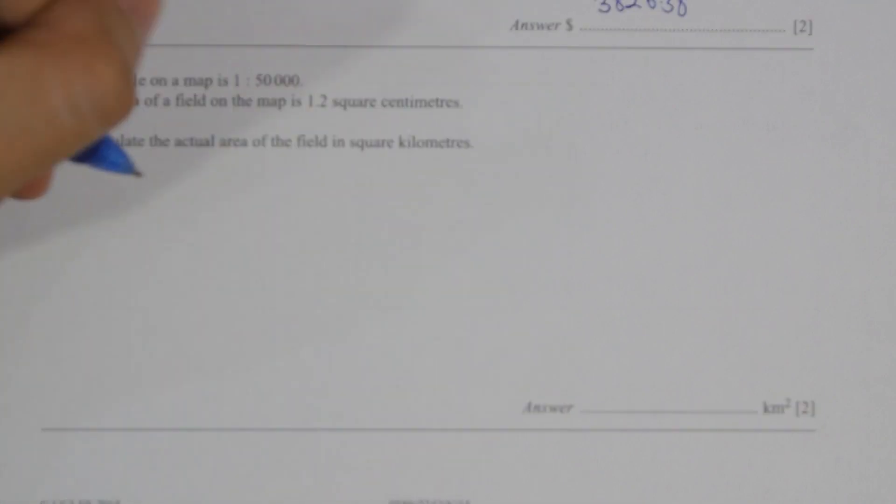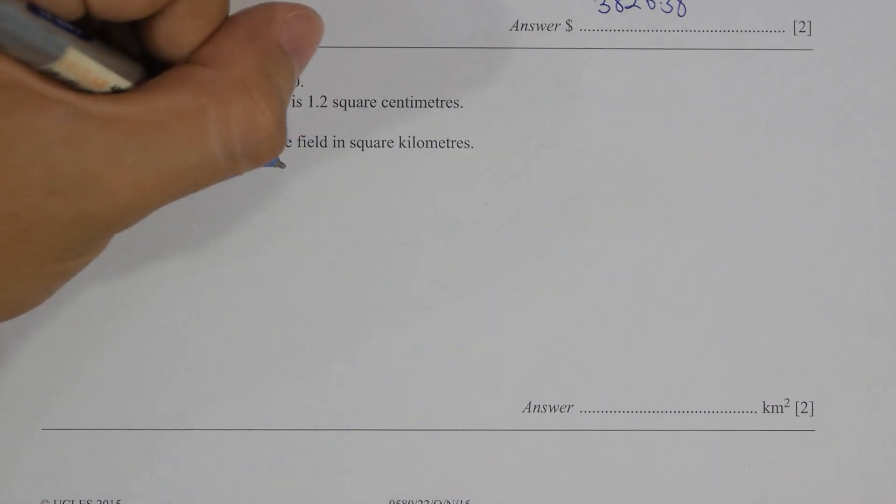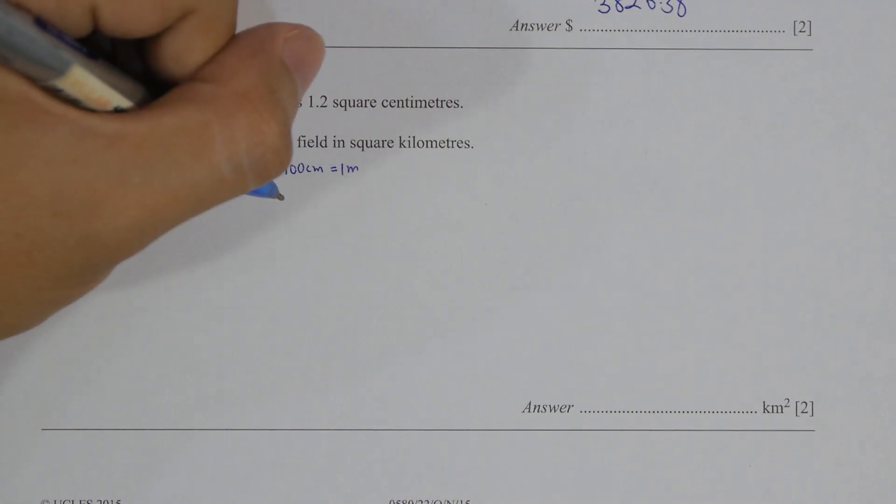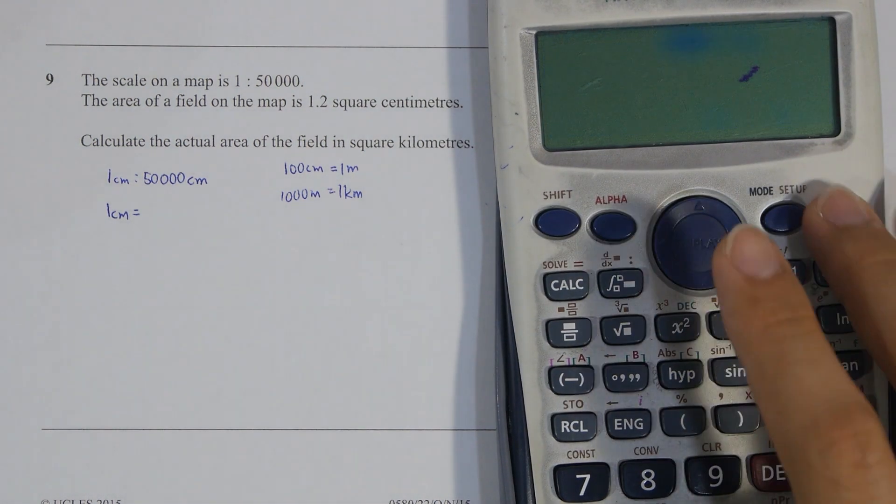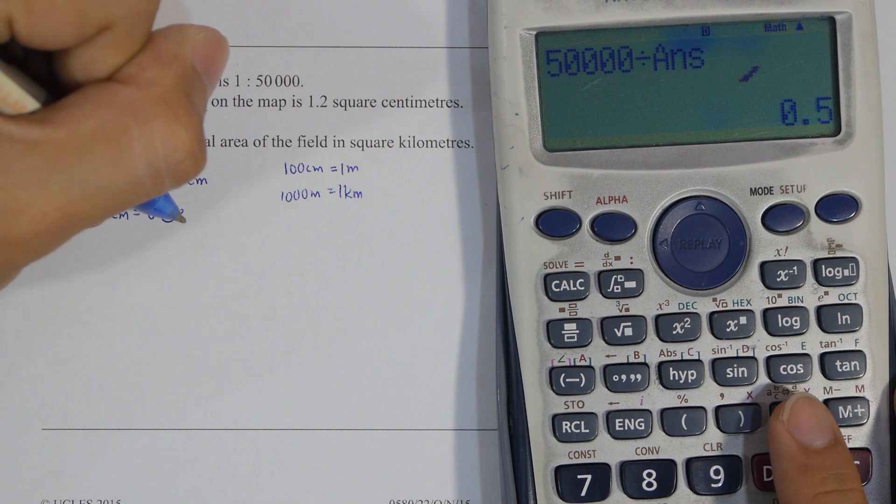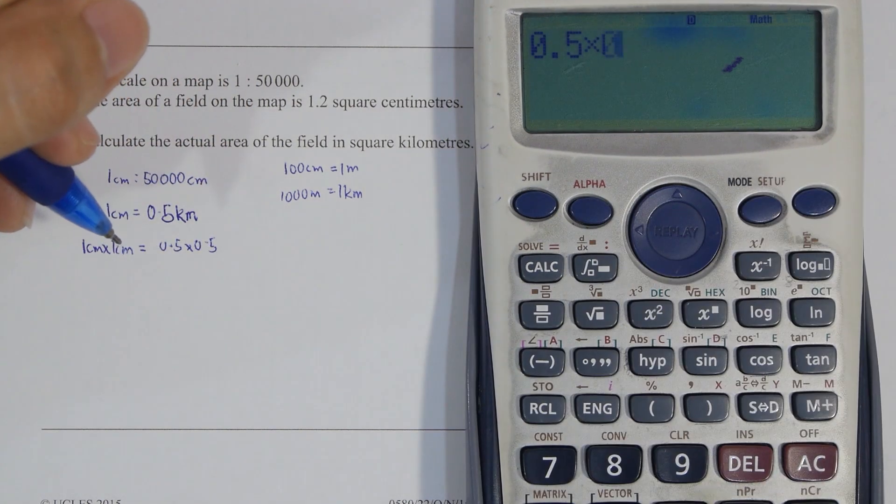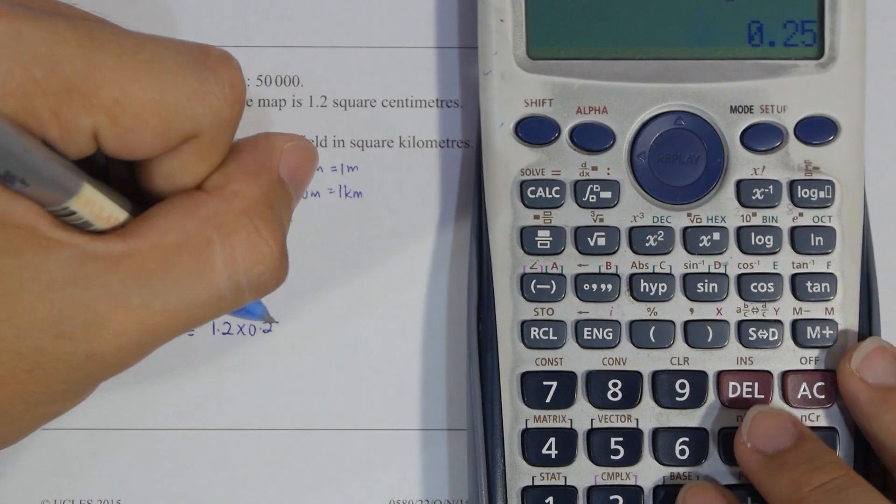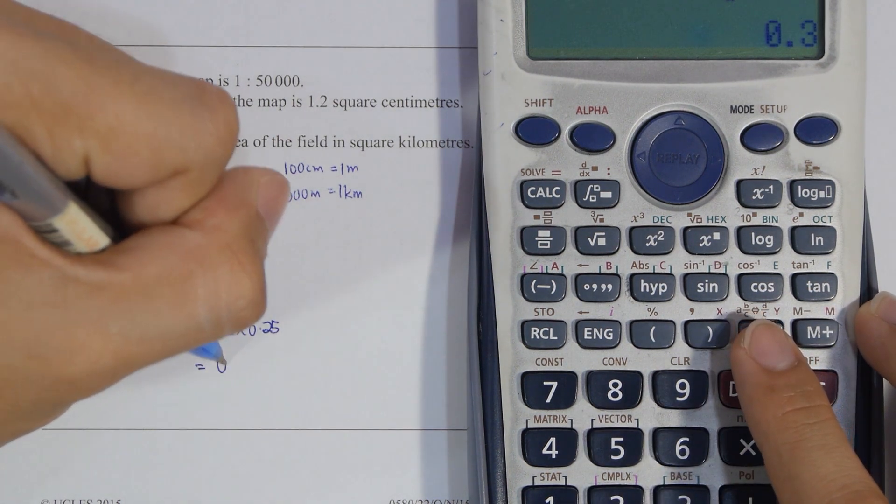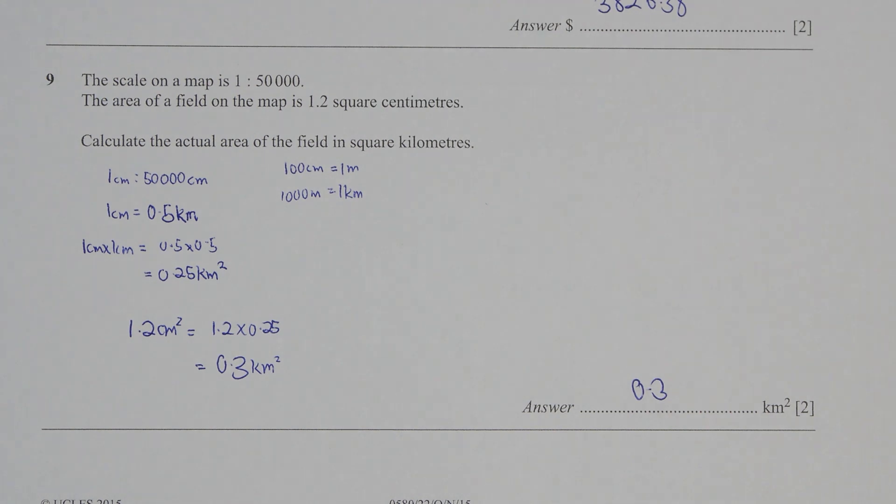And for question 9, 1 to 50,000. So 50,000 is actually 0.5 kilometers. So 1 centimeter, 1 square equals 0.5 times 0.5, which is 0.25 kilometer squared. So 1.2 times 0.25, then you get 0.3 kilometer squared as the final answer.